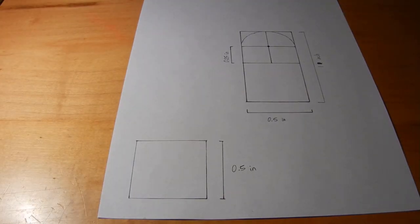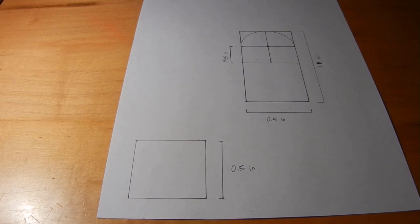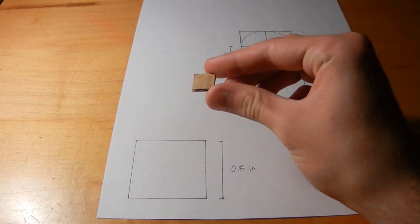Next you're going to want to cut out the spacers. These are pretty straightforward they're just little squares of cardboard .5 by .5 inches. Here's one I cut out.